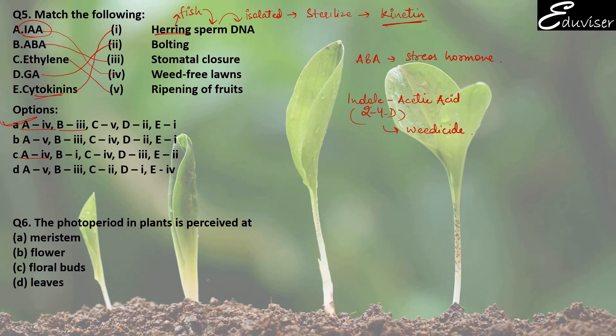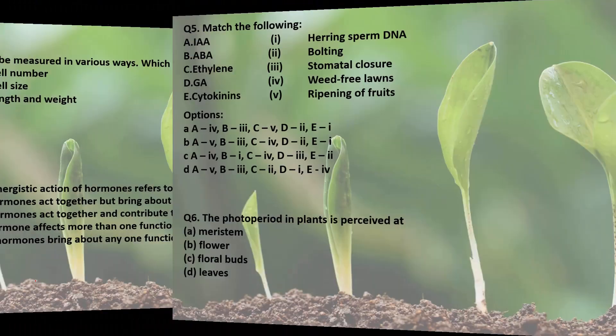Question number 6: The photoperiod in plants is perceived at — basically, only fully developed leaves can receive the light stimulus. No other part can. When fully developed leaves receive the light stimulus, photoperiodism plays a major role in whether or not flowering occurs. So the answer for question 6 is D.